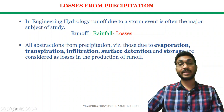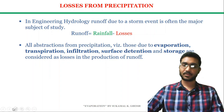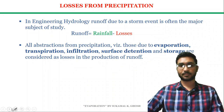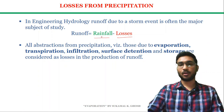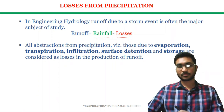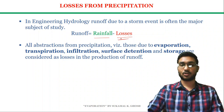Before going into the detailed discussion about evaporation, we should know what are the losses or obstructions from precipitation. In engineering hydrology, the study of runoff is one of the major topics. The runoff can be obtained by subtracting the losses from rainfall or precipitation. To calculate the runoff, we also need to know how to calculate the losses or the obstructions.